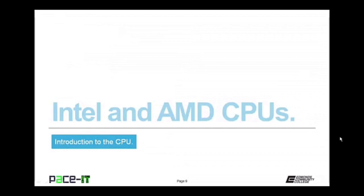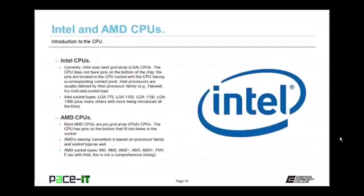Now let's move on to Intel and AMD CPUs, starting with Intel. Intel currently uses land grid array, LGA, CPUs. The CPU does not have pins on the bottom — the pins are actually located in the CPU socket on the motherboard, and the CPU has corresponding contact points on its bottom. Intel processors are usually defined by their processor family — like Haswell or Ivy Bridge — and their socket type. Some Intel socket types are the LGA 775, LGA 1155, LGA 1156, and LGA 1366. There are many more Intel socket types and more are being introduced all the time.